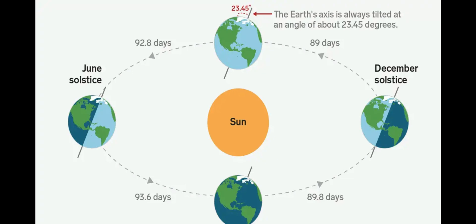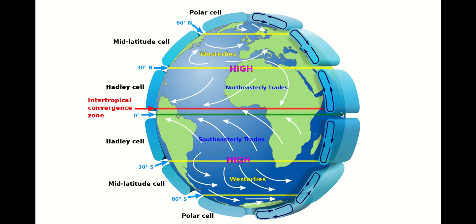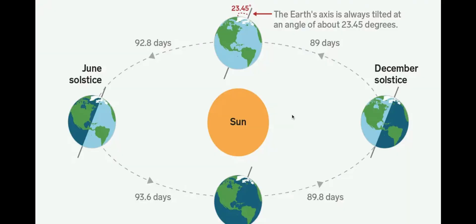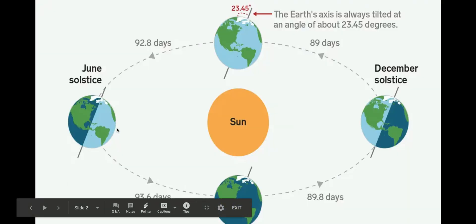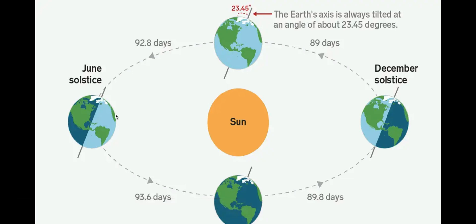The part of the Hadley cell and the pressure system that we're most interested in at this stage is known as the Intertropical Convergent Zone. This marks the boundary between the Hadley cells, and it's also the area where the trade winds — these white arrows — meet. So in the summer, the Intertropical Convergent Zone between the Hadley cells moves north, and in the winter the Intertropical Convergent Zone moves south, all due to the Earth's tilt.